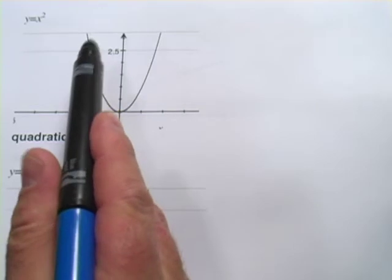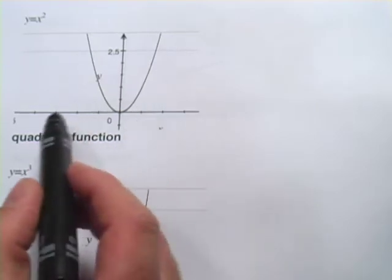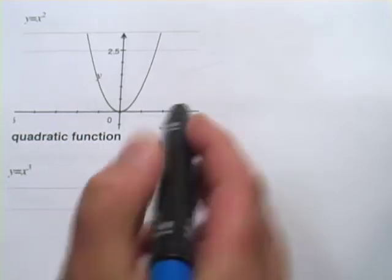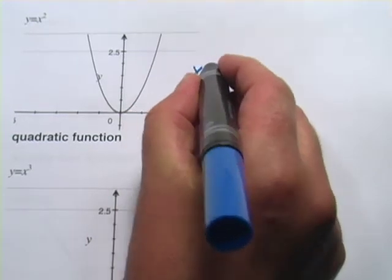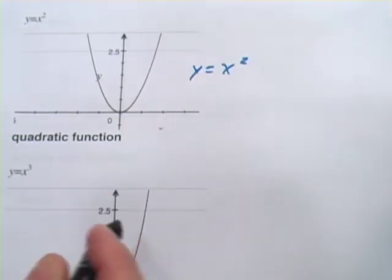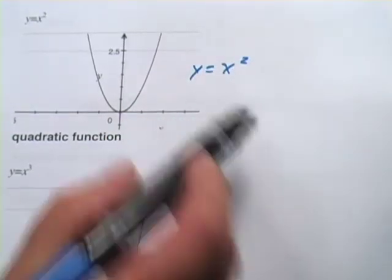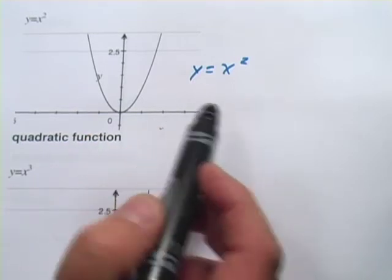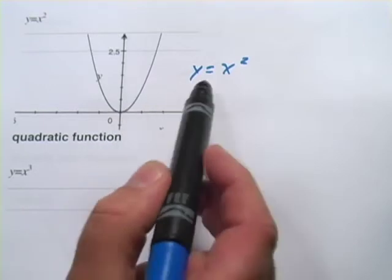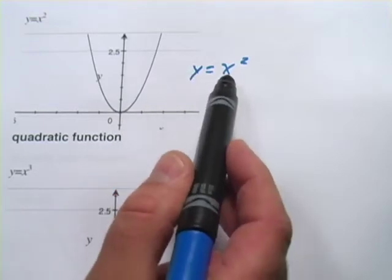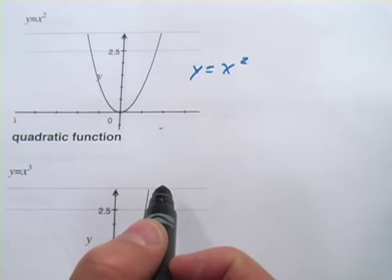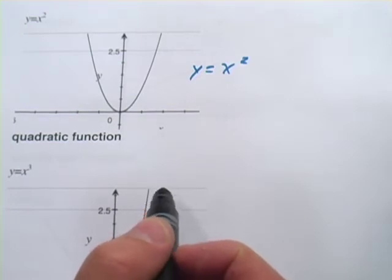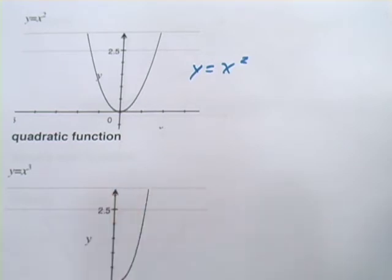This U-shaped thing here is what we call a quadratic function, and the basic formula for that is Y equals X squared. You could add other things to this formula. You could multiply the X by something. You could add or subtract numbers to it. But the basic shape, if you've got a Y over here and an X squared over here, is going to be this U. So that's a quadratic. That's the first in this little zoo of non-linear functions we're going to learn.